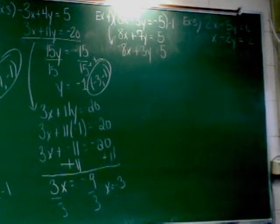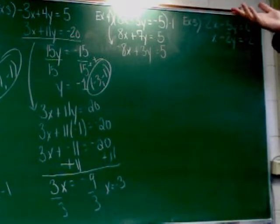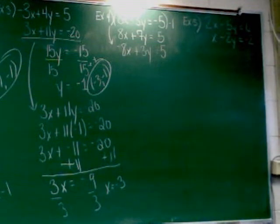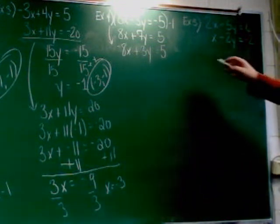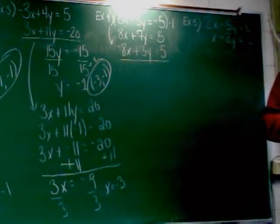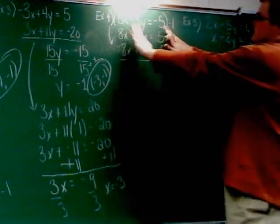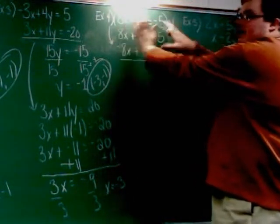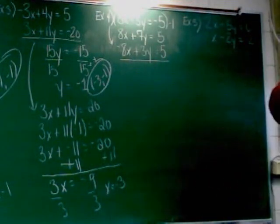And now, all right, back to where I was a minute ago. Now I can just start adding up going this way. No big deal. So if I start doing that now, I've got 8x and negative 8x. That's the part that disappears. 7y and 3y, that's going to give me how many y's? 10y.